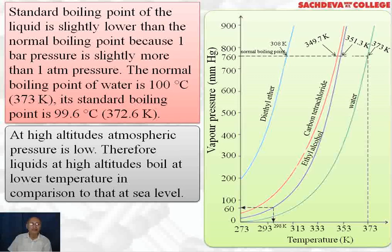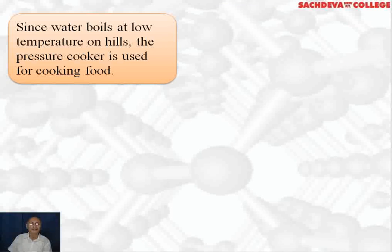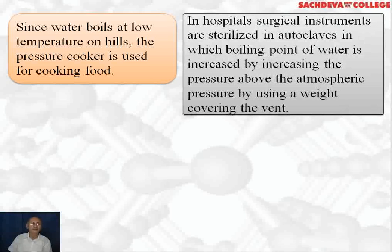At higher altitudes atmospheric pressure is low; therefore liquids boil at lower temperatures compared to sea level. At a hill station, water will boil below 100°C because atmospheric pressure at higher altitude is less, so at a lower temperature the vapor pressure of water becomes equal to atmospheric pressure. That is why vegetables — particularly pulses — do not cook properly at hill stations, and people are advised to use a pressure cooker to cook food faster while saving energy.